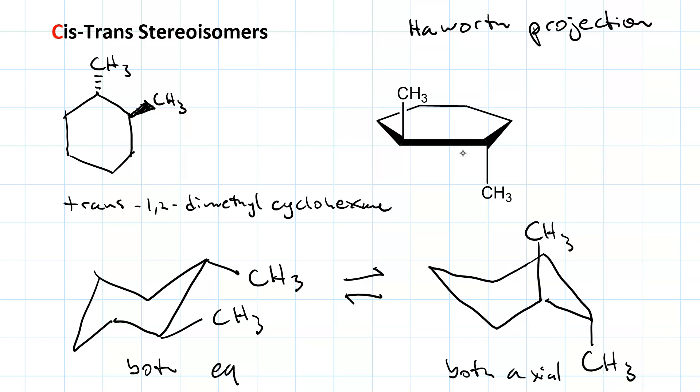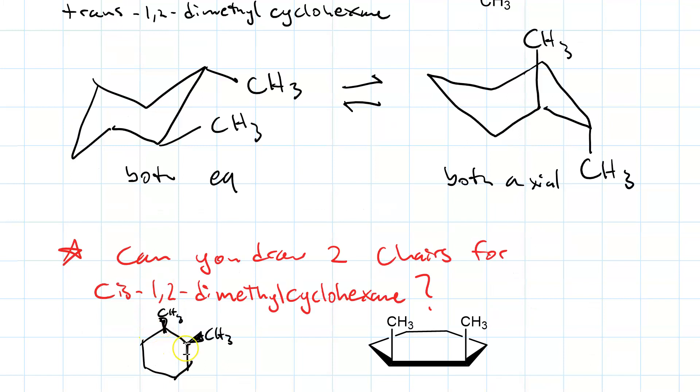Now, if we had cis-1,2-dimethyl cyclohexane, the two chairs would be equally stable. So, here's a wedge dash structure and a Haworth projection of cis-1,2-dimethyl cyclohexane. Go ahead and pause your video and draw the two chairs.